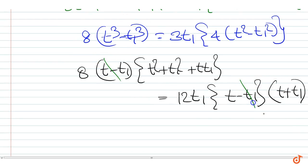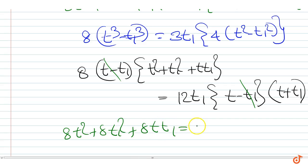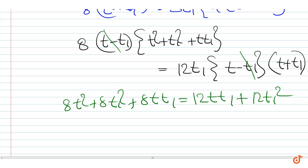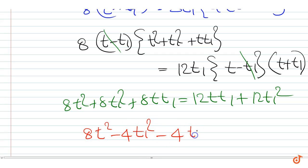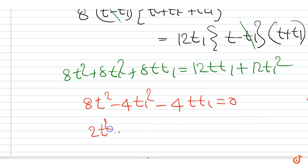Cancelling t minus t1, we get 8t squared plus 8t1 squared plus 8t times t1 equal to 12t times t1 plus 12t1 squared. Or we can write 8t squared minus 4t1 squared minus 4t times t1 equal to 0. That is, 2t squared minus t1 squared minus t times t1 equal to 0.